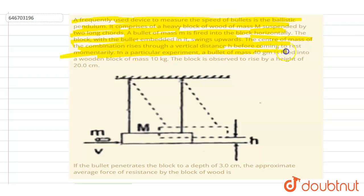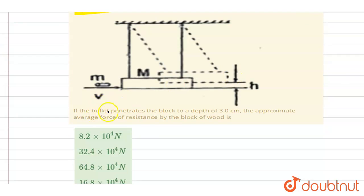In this particular experiment, a bullet of mass 40 gram is fired into the wooden block of mass 10 kg. The block is observed to rise by a height of 20 cm. If the bullet penetrates the block to a depth of 3 cm, find the appropriate approximate average force of resistance by the block.